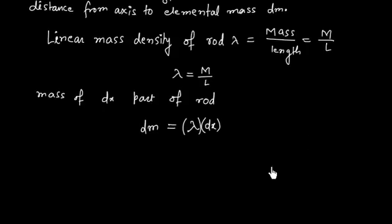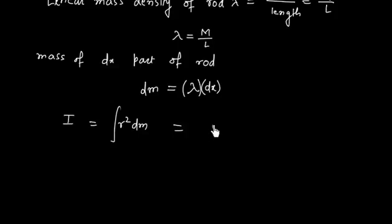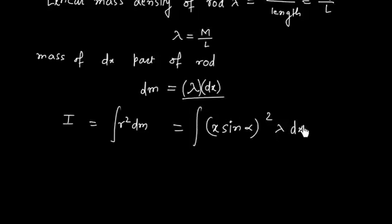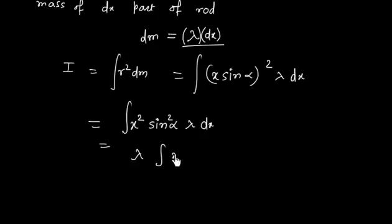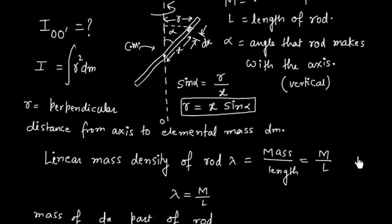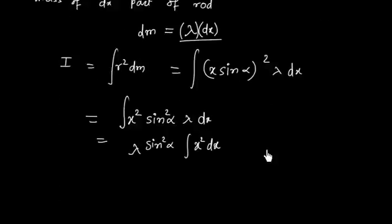Now we can put this result into the integral: I equals the integral of r squared dm. R is x sin alpha and dm is lambda times dx. So this becomes the integral of x squared sin squared alpha times lambda dx. Since lambda and sin squared alpha are constants, we can take them outside the integral, giving lambda sin squared alpha times the integral of x squared dx.